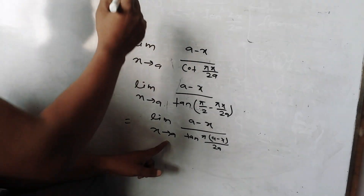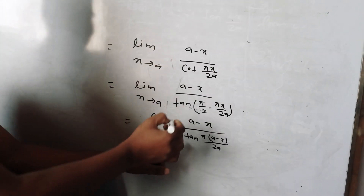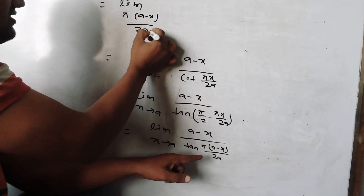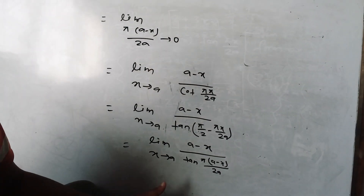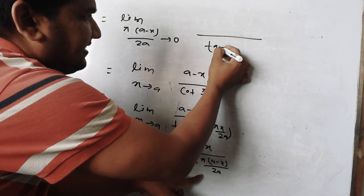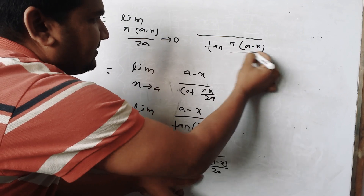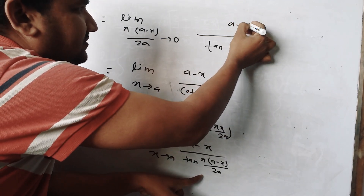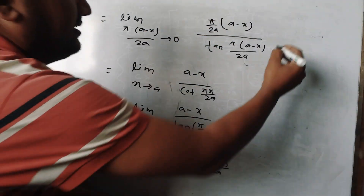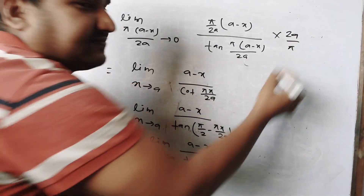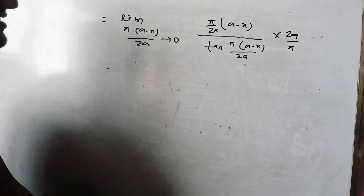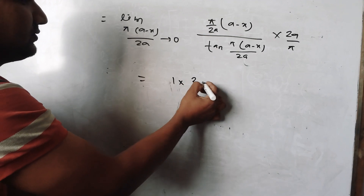As x tends to a, (a minus x) tends to 0, and the angle tends to 0. We use the standard limit: theta over tan(theta) tends to 1 as theta tends to 0. So the expression becomes: limit of pi times (a minus x) over 2a, divided by tan of that, times 2a by pi. This gives 1 times 2a upon pi.